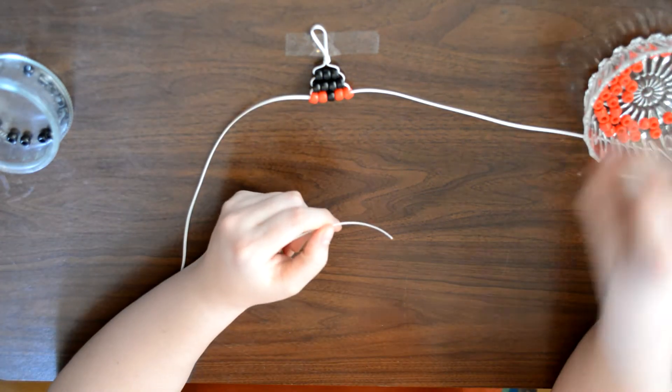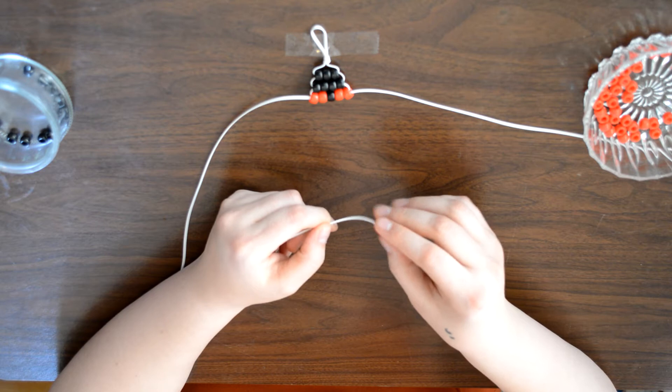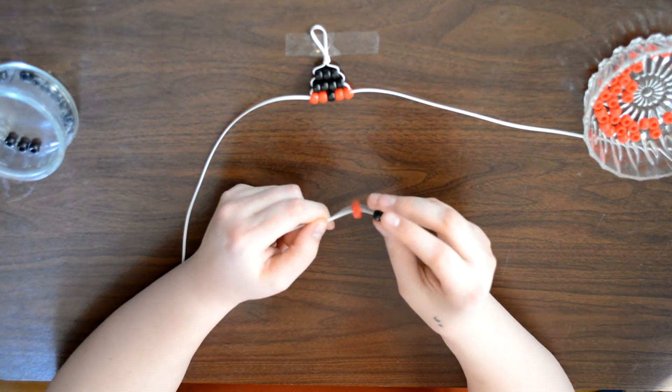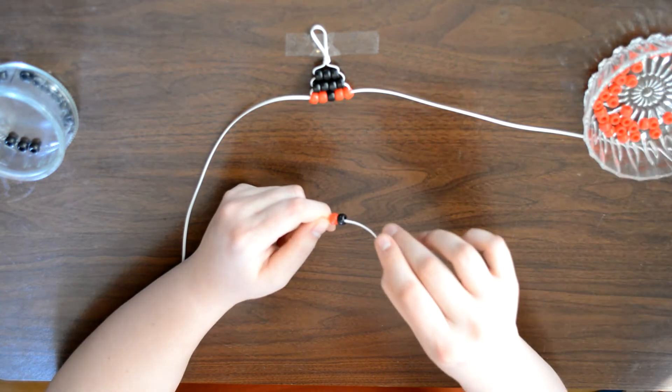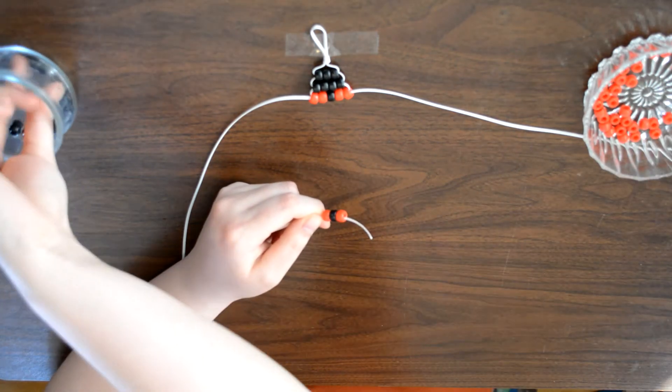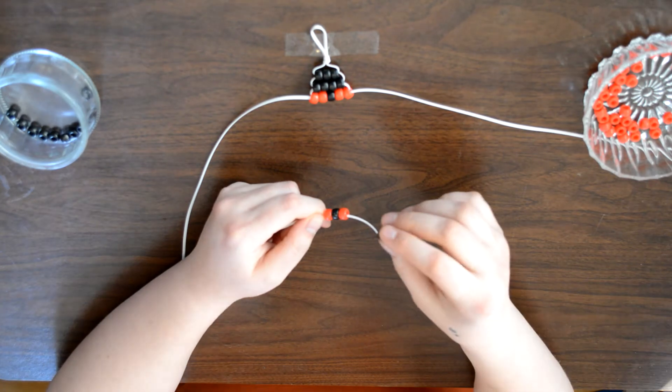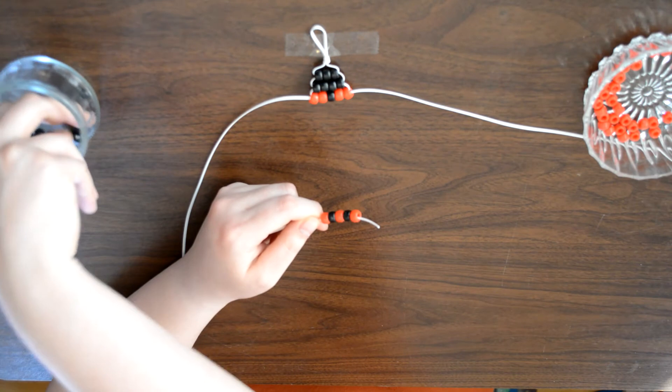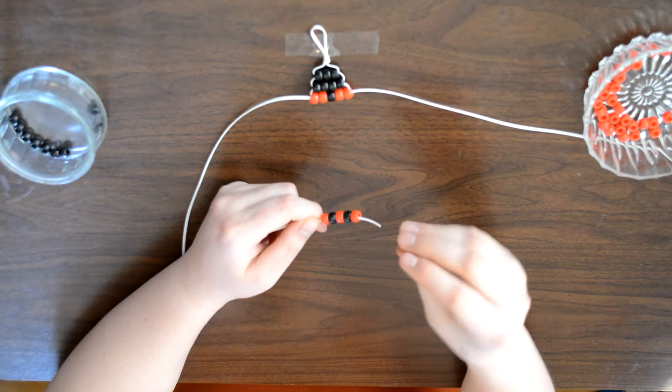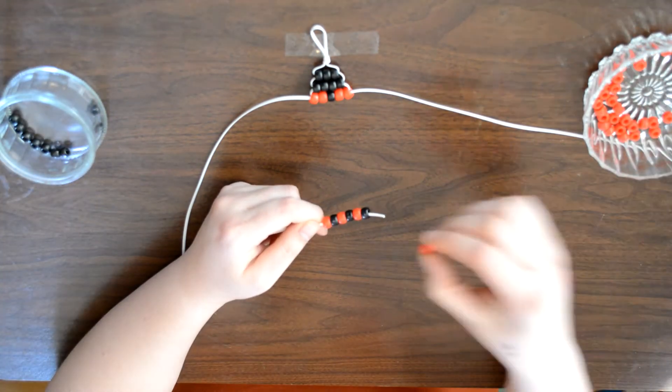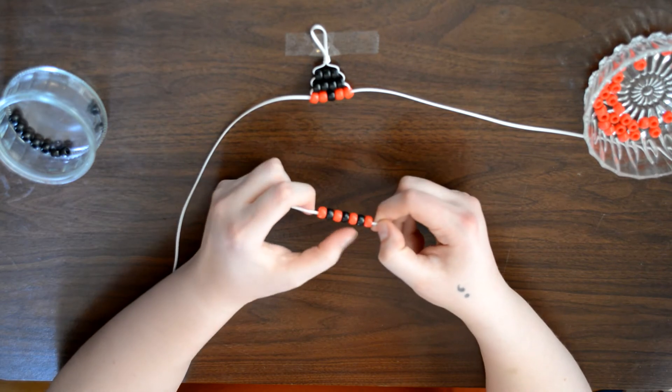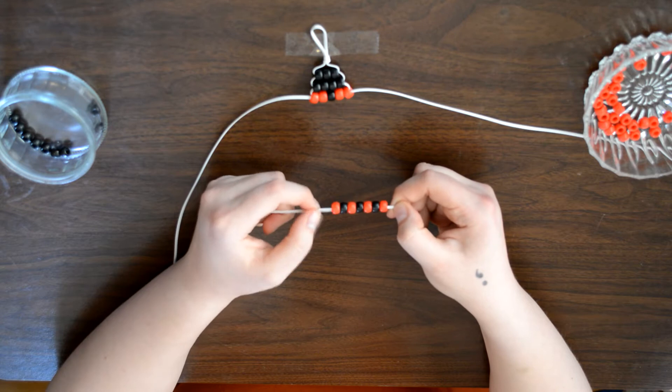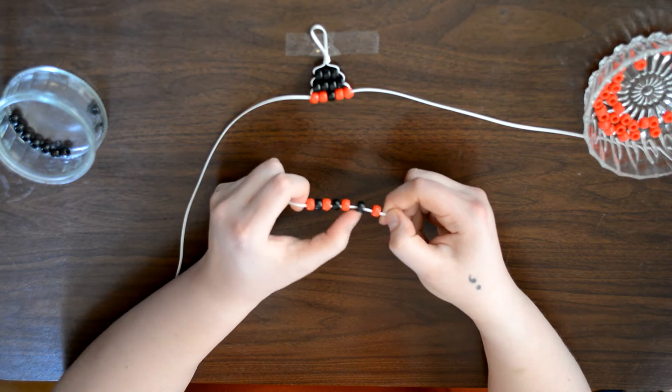So next you want to do one red bead, one black bead, one red bead, one black bead, one red bead. So three black beads and four red beads in an alternating pattern going red, black, red, black, red. Red, black, red. Pull this up to the top as well.